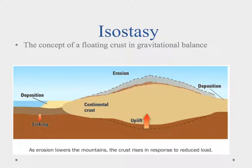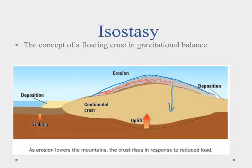The last concept is isostasy — the concept of a floating crust and gravitational balance. A tall mountain has more crustal material and is heavier, causing it to sink further into the asthenosphere. But as erosion removes material from the top, it becomes lighter and uplift occurs, moving upward. So isostasy says these big pieces of crustal plates go up and down depending on the amount of mass on them — heavier plates sink more, and as they erode they rise up. This can happen to parts of a plate, not just the whole thing.